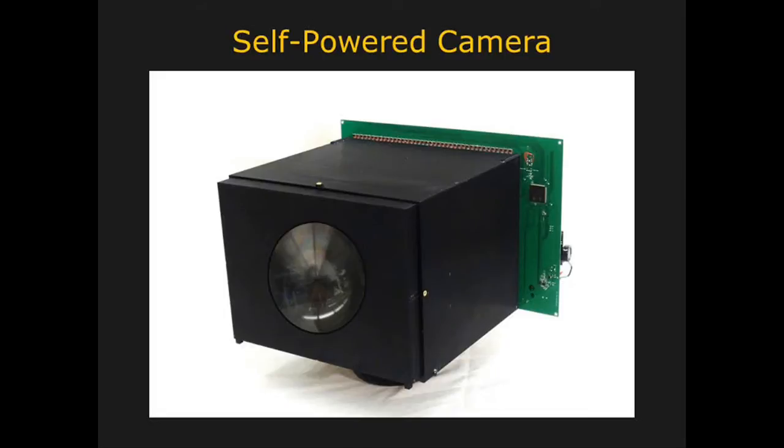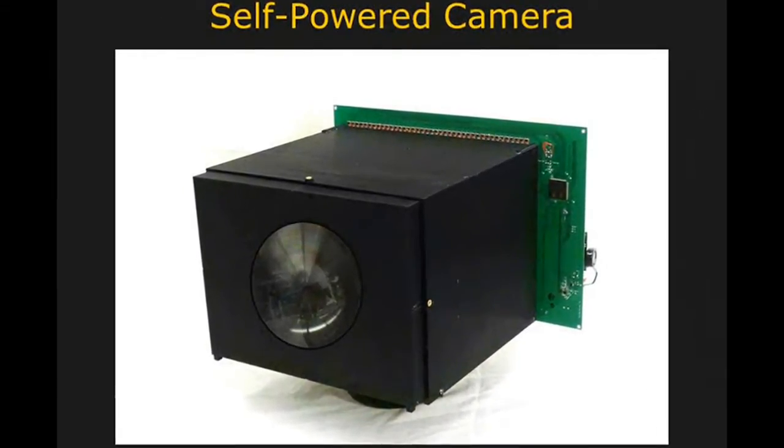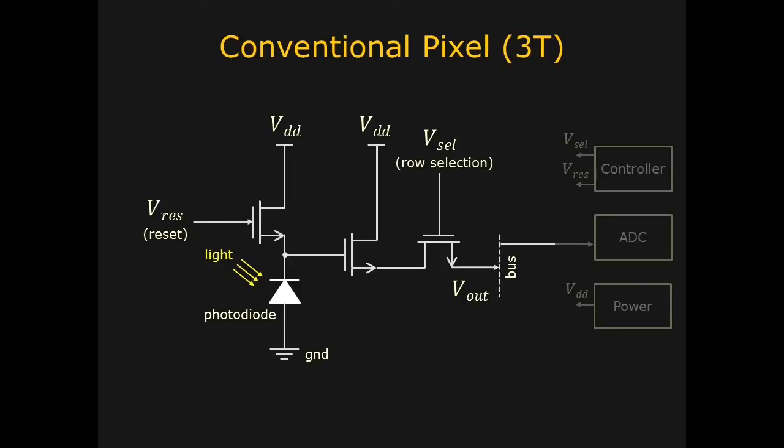Now computer scientists at Columbia University have come up with a solution. They have made a video camera that can power itself without requiring separate solar panels or any other external power supply.